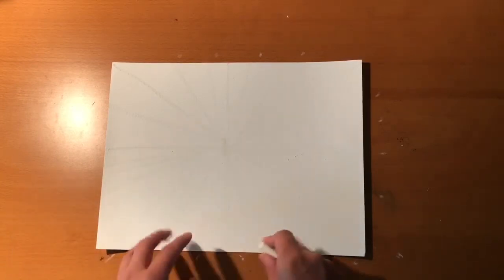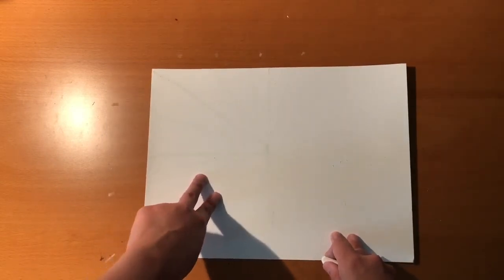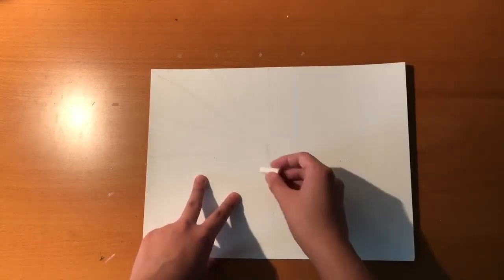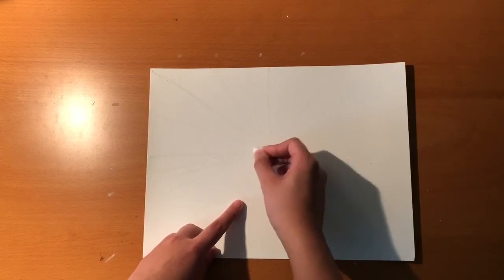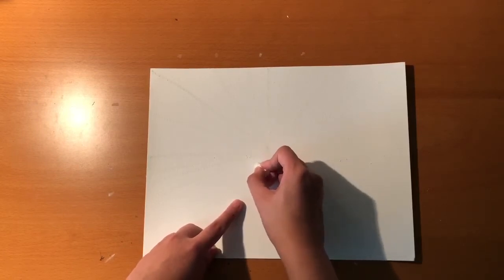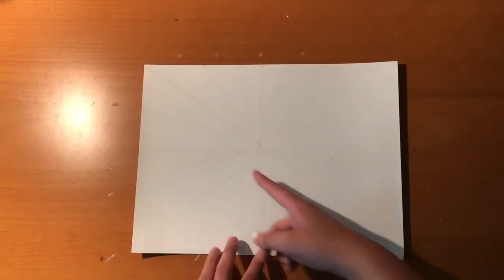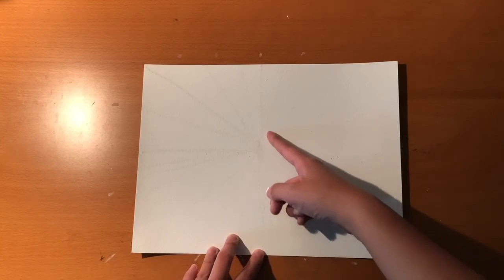Now, we are going to draw the web of the spider web. So, take your oil pastel. Find the section in between two lines that you already drew before. And we are going to make a small line connecting the two. But make sure the line is curved to look like a spider's web. You are going to repeat this until you get all the way around the center of your circle.